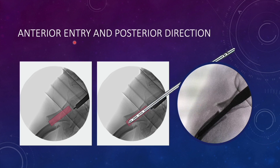When the entry is anterior and directed towards the posterior cortex, there is risk of iatrogenic flexion. The nail will start from the anterior part, hit the posterior cortex, and may fracture it — resulting in gross flexion of the fragment. As you can see here, the entry point is anterior and directed posteriorly, so the proximal fragment has remained in flexion because of the wrong track created for nail placement.